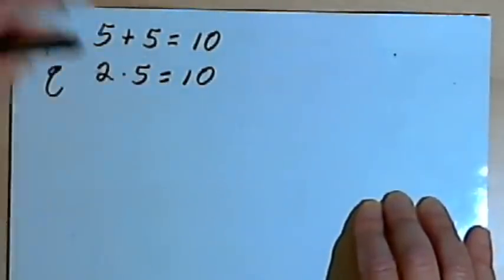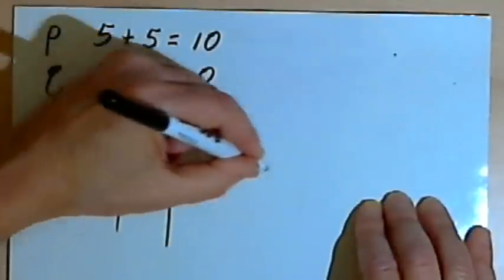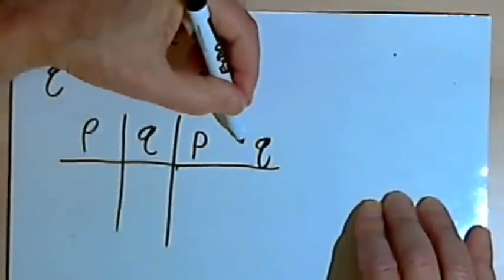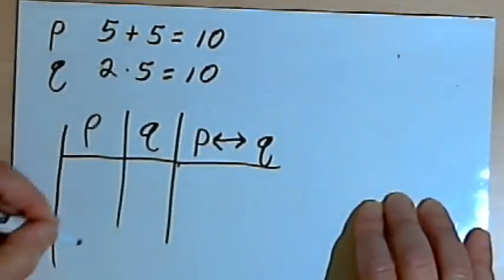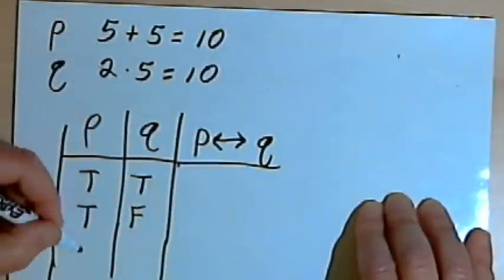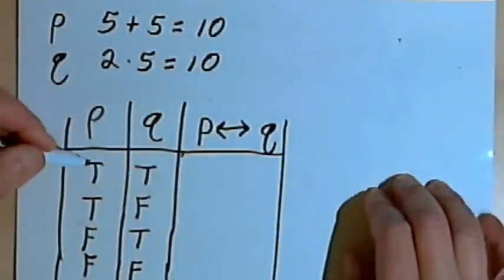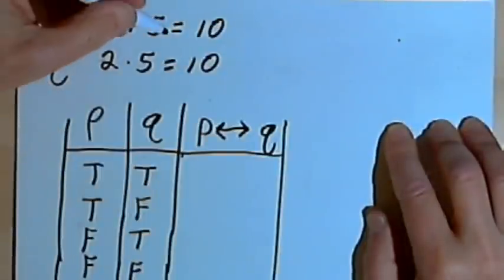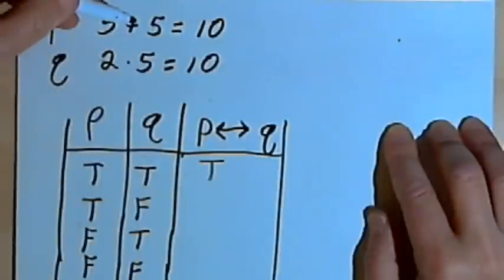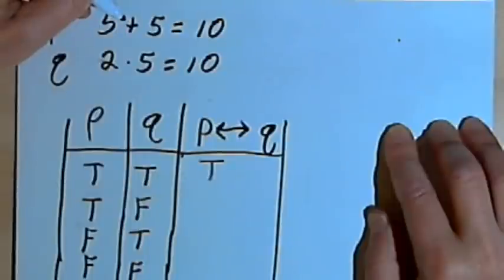Here's the truth table for the biconditional. We have columns for P, Q, and 'P if and only if Q.' If P and Q are both true — if it's true that 5 plus 5 equals 10 and true that 2 times 5 equals 10 — we get a true statement. Knowing one lets us expect the other, and vice versa.